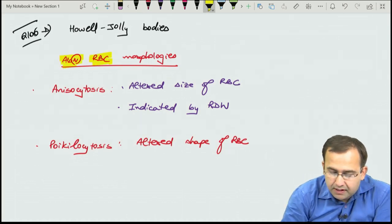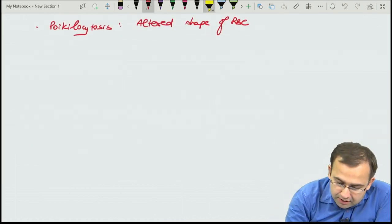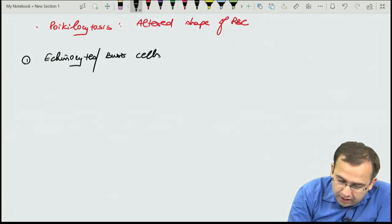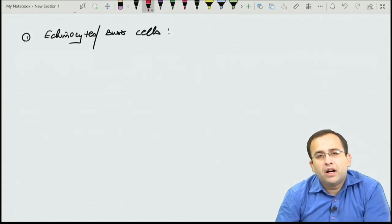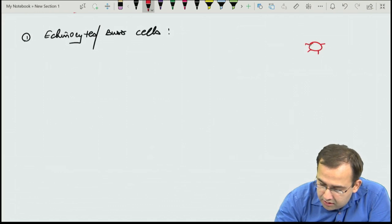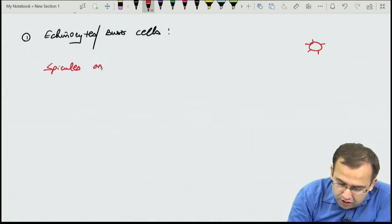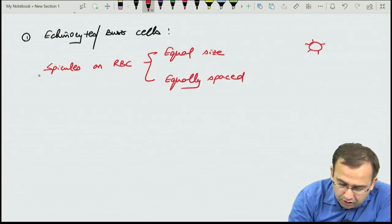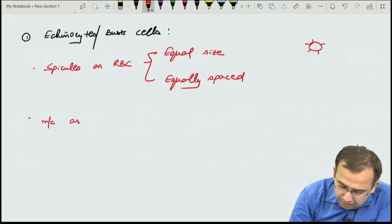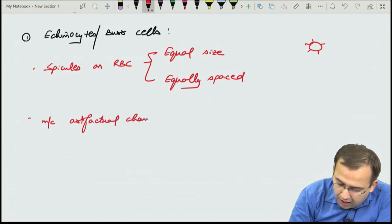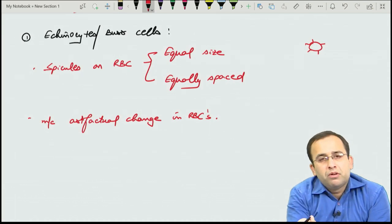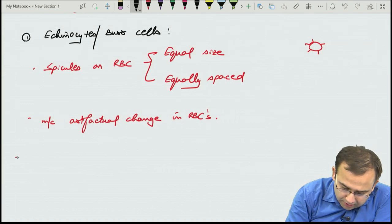Echinocytes or burr cells: RBCs with spicules of equal size and equally spaced. This is the most common artifactual change in RBCs — nothing is wrong with the patient, it happens while making the slide, so we don't even report it.